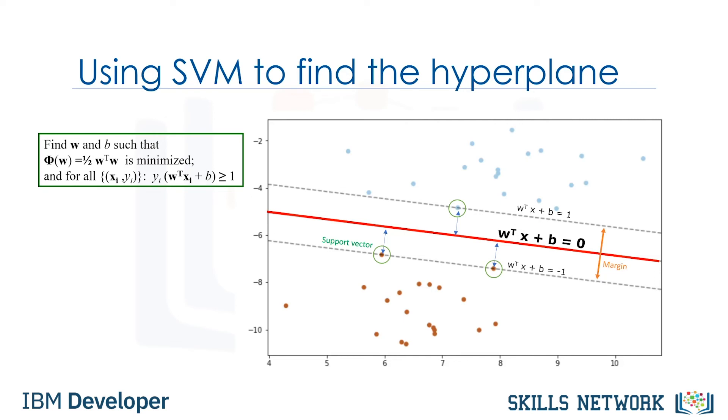You can make classifications using this estimated line. It is enough to plug in input values into the line equation. Then, you can calculate whether an unknown point is above or below the line. If the equation returns a value greater than zero, then the point belongs to the first class, which is above the line, and vice versa.